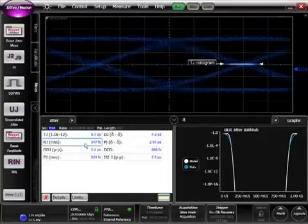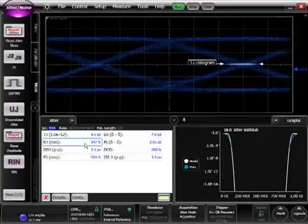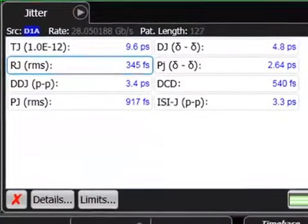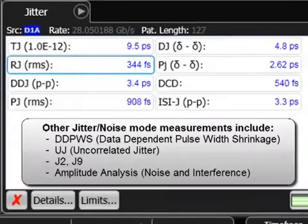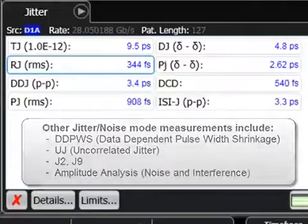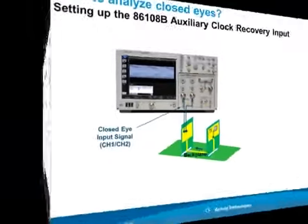The 86108B helps designers make accurate measurements on devices such as these, where the random jitter is less than 350 femtoseconds and the total jitter, estimated at 10 to the minus 12, is less than 10 picoseconds.